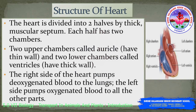The heart is divided into two halves by a thick muscular septum, and each half is divided into two chambers. The two upper chambers are called auricles, also known as atria, and they have thin walls. The two lower chambers are called ventricles and they have thick walls. The right chamber of the heart pumps deoxygenated blood to the lungs, and the left chamber pumps oxygenated blood to all other parts of the body.